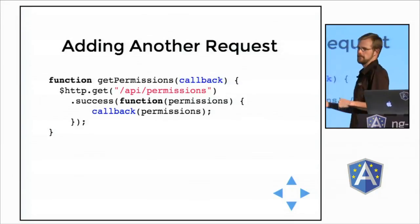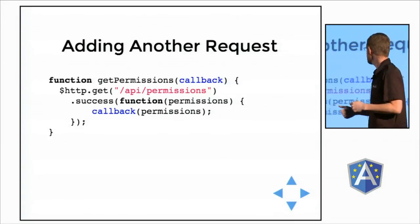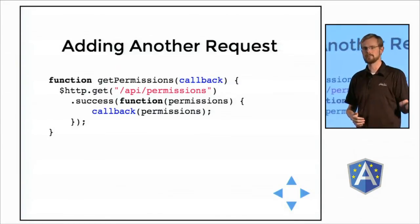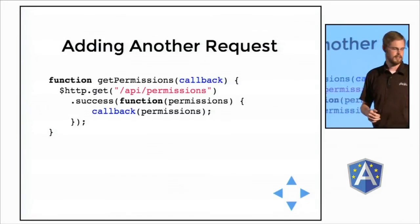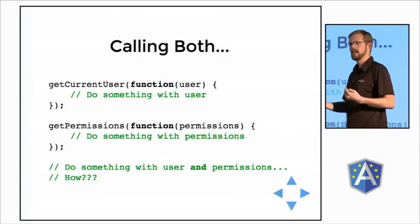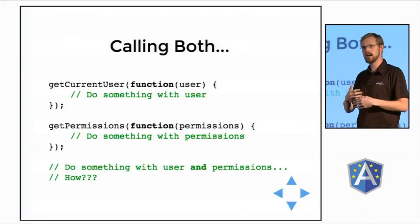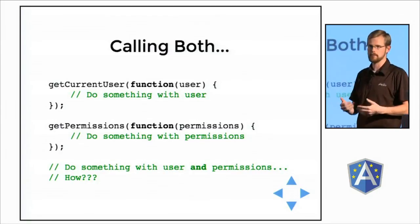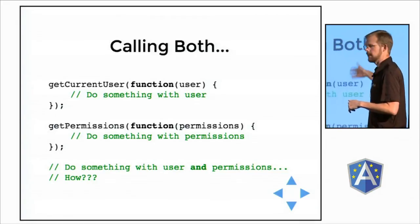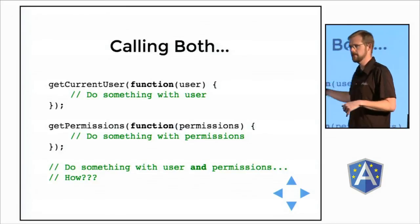Now let's say we want to do another one. The last function was get current user; this function is get permissions. Same story, same pattern — pass a callback. When the operation is complete, it calls your callback. But what if I want to call both of them, and I need the data from both in the same context? You simply can't do it in parallel this way, because the user object is not available in the same scope as the permissions object.